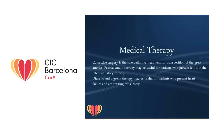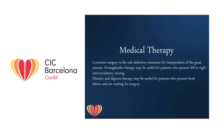Corrective surgery is the sole definitive treatment for transposition of the great arteries. Prostaglandin therapy may be useful for patients who present left-to-right intercirculatory mixing. Diuretic and digoxin therapy may be useful for patients who present heart failure and are waiting for surgery.